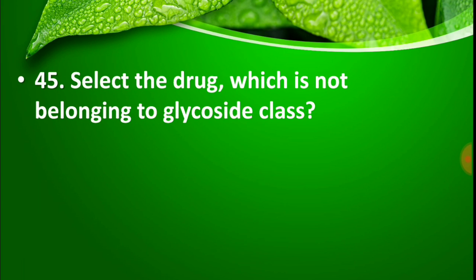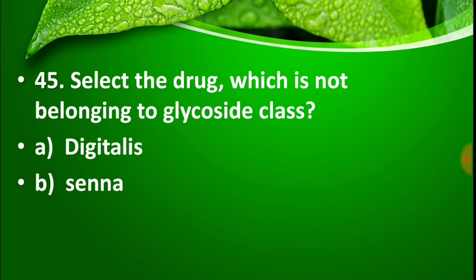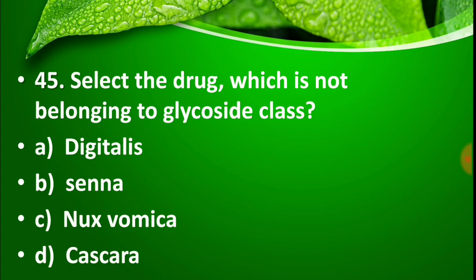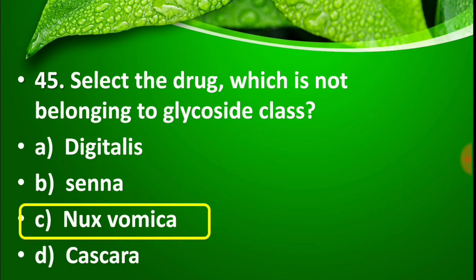Question number 45: Select the drug which does not belong to the glycoside class. Options: Option A: Digitalis, Option B: Senna, Option C: Nux vomica, Option D: Cascara. The right answer is Option C, Nux vomica. Nux vomica is an alkaloid, not a glycoside. Digitalis, Senna, and Cascara come under the glycoside class.